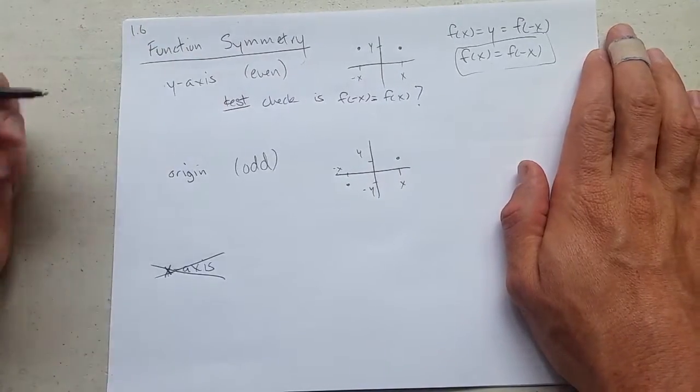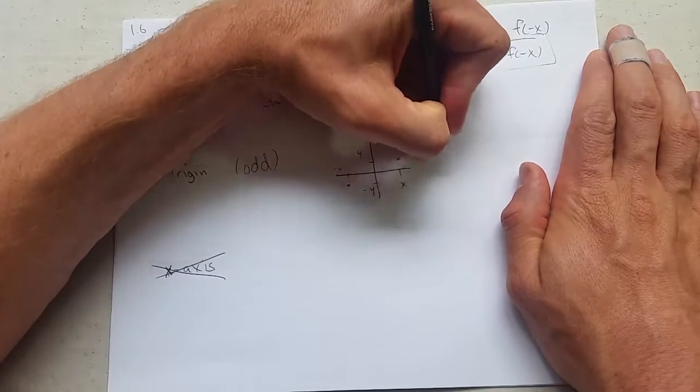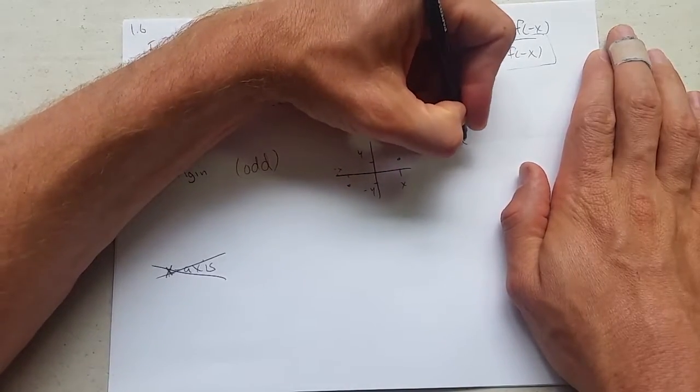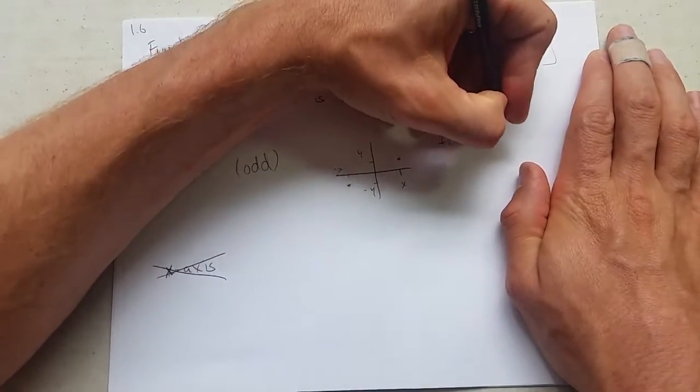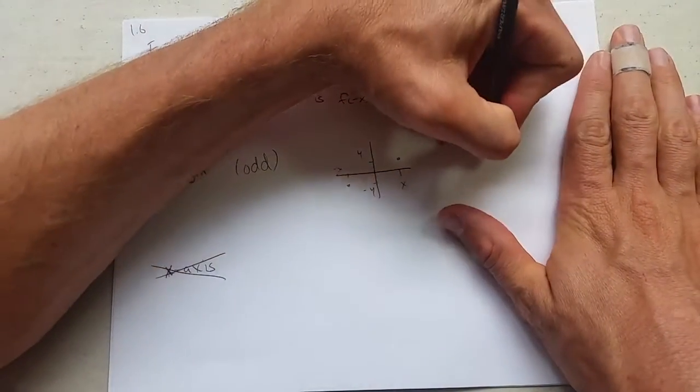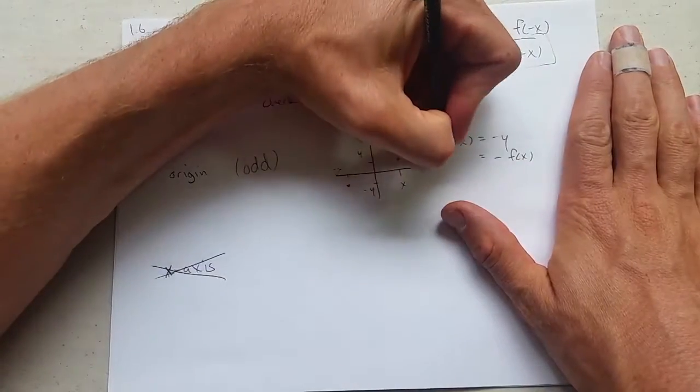Now for origin symmetry, here's the two points. What does that mean? If you plug in negative x, you'll get out negative y, and negative y is also known as negative f of x.